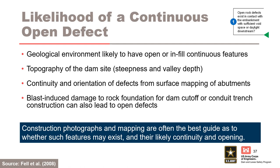When evaluating the first node of the event tree, consider the following factors. Is the geological environment likely to have open or infilled continuous features? What is the topography of the dam site — how steep is it, and what is the valley depth? What is the continuity and orientation of the defects from surface mapping of the abutment? Is there blast-induced damage of the rock foundation from a dam cutoff or conduit trench that could also lead to defects? Construction photographs and mapping are often the best guide to find whether such features may exist and their likely continuity and opening size. Do not consider cutoff elements at this point; effectiveness of foundation treatment is a separate node.